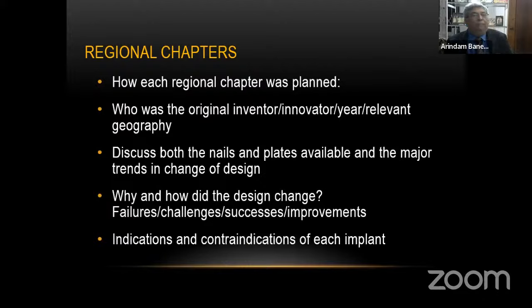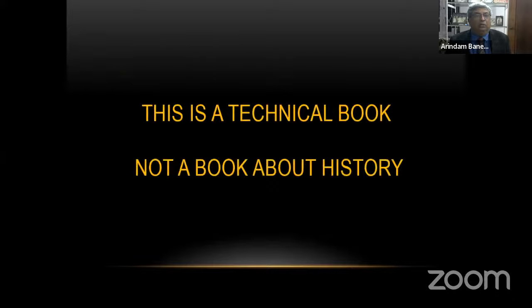Each regional chapter was planned so that authors were asked to find the original inventor, the original innovator, the year, the relevant geography, and then discuss what implants were available, how the design changed, what were the failures, challenges, successes, and improvements, and the indications and contraindications of each implant. This is a technical book, not a book about the history of implants — though we also thought it's important to define the history and why the technique has changed with time.